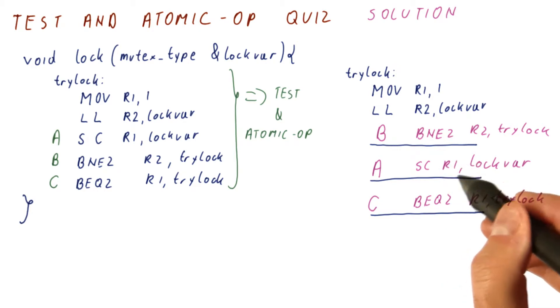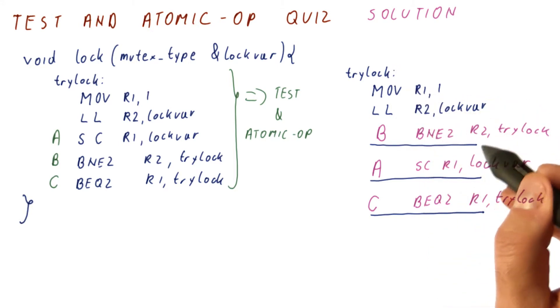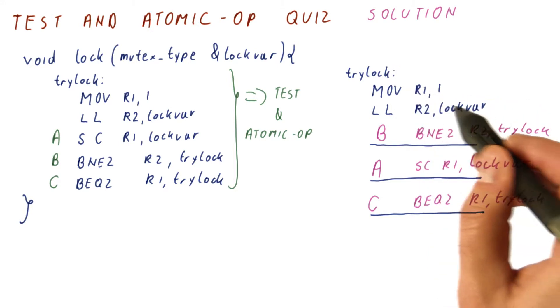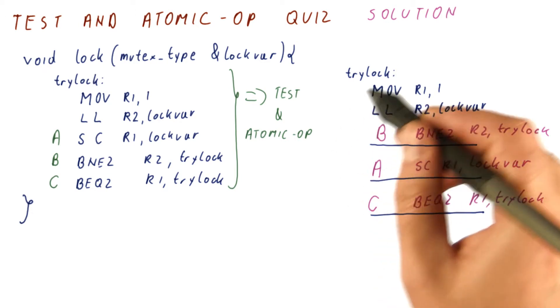So if R1 is equal to 0, that means that our store conditional didn't succeed. We go back to trying to acquire the lock again. We have seen that the lock is free, but between our load link and our store conditional, somebody else managed to write to the lock, so we need to retry the whole thing.